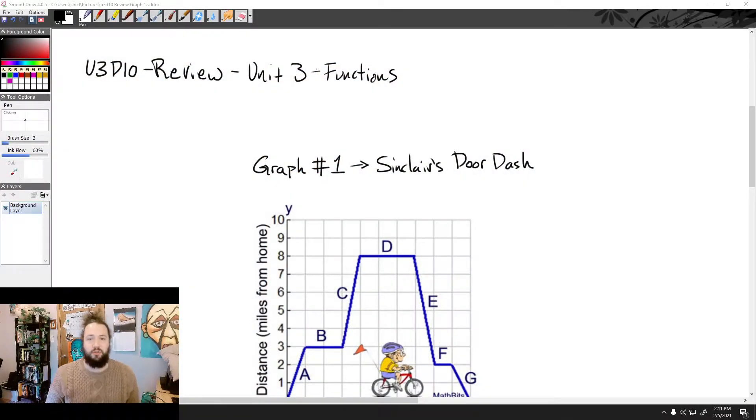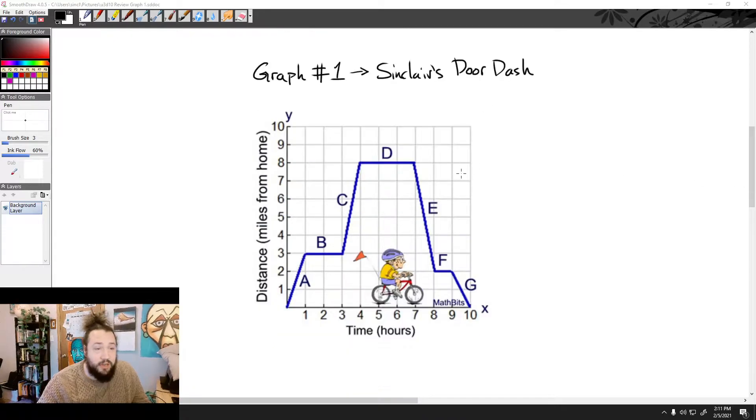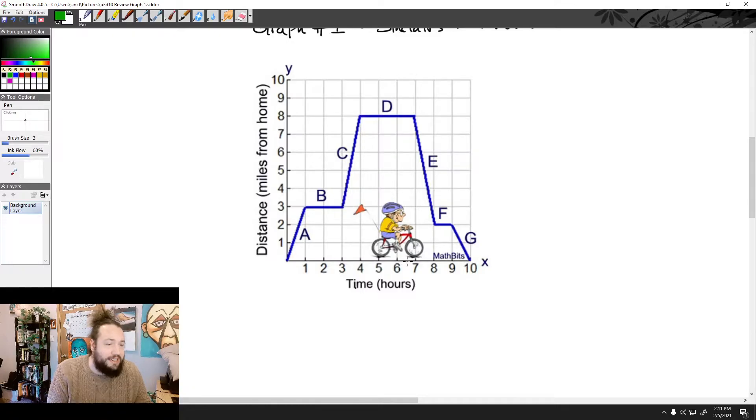And remember, our Unit 3 is about functions. So we're going to try and do all the things about functions that we can find in this graph. So, in this graph, this is Sinclair's DoorDash delivery. Okay, so Sinclair is biking around the city, delivering his food from a cooking club. You know, Wednesday cooking club, make some good food. I got to go out, make all my deliveries to all my students.